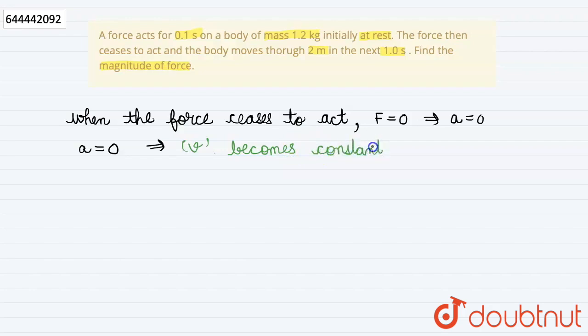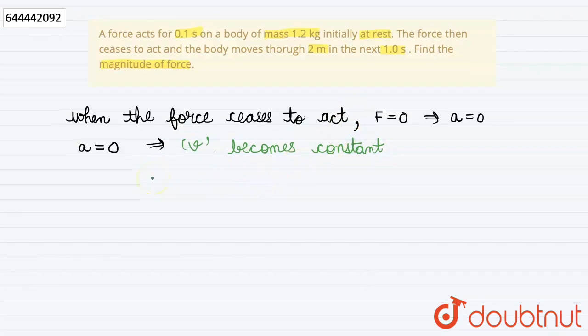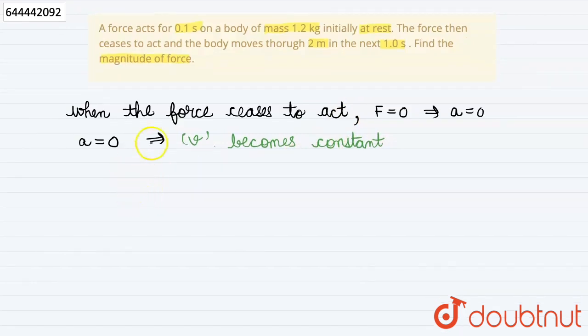Now this velocity can be calculated from the information given in the question as it moves through two meters in one second. So velocity will be distance 2 meters upon the time taken by it, 1 second. So this will be 2 meter per second.